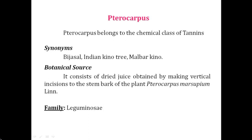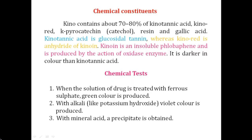The name of the plant is Pterocarpus marsupium, and the family is Leguminosae. The first drug we have seen in this family is liquorice or senna. To repeat the biological source: it consists of dried juice obtained by giving a vertical incision to the stem bark portion of the plant Pterocarpus marsupium, family Leguminosae.